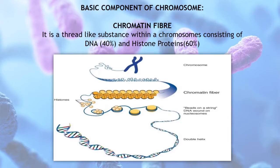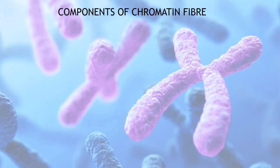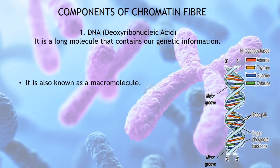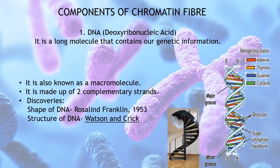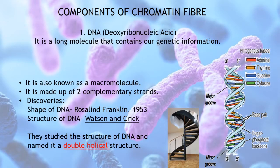Now that we have talked about chromosomes and chromatin fibers, let's look at the components of chromatin fibers — what they are made of and how they help in coiling and condensation. We begin with DNA. DNA, deoxyribonucleic acid, is a long molecule that contains our genetic information. It is also called a macromolecule because of its large size. It is made up of two complementary strands that run alongside each other. The shape of DNA was first described by Rosalind Franklin in 1953.